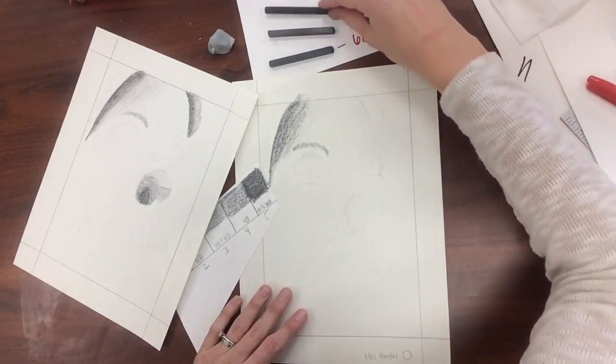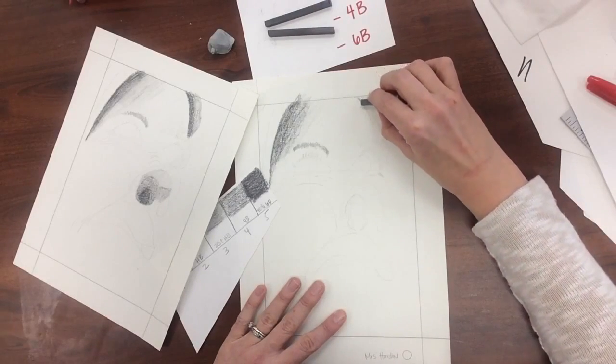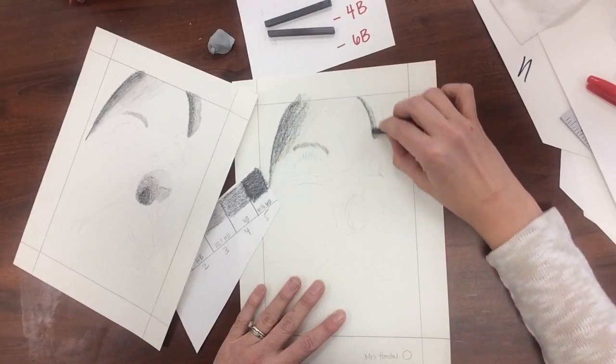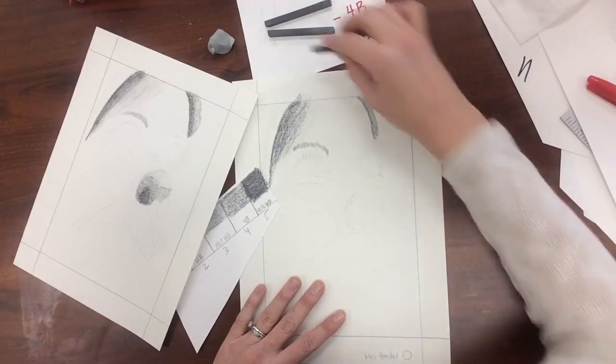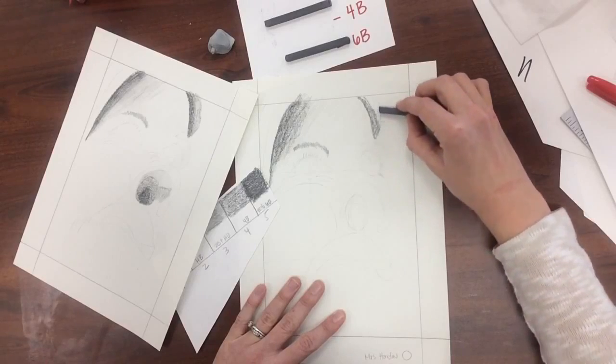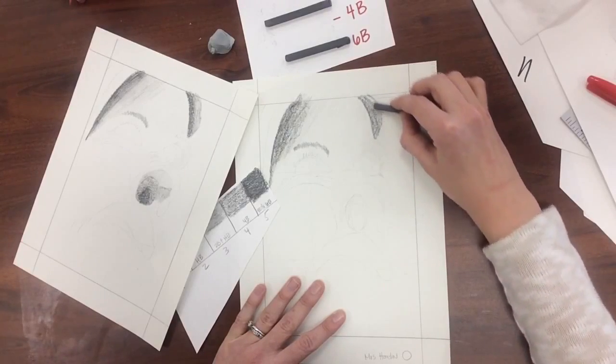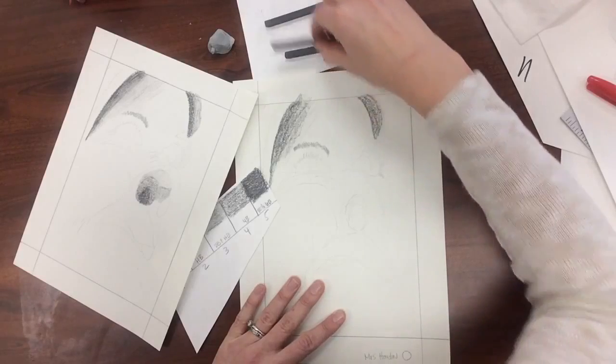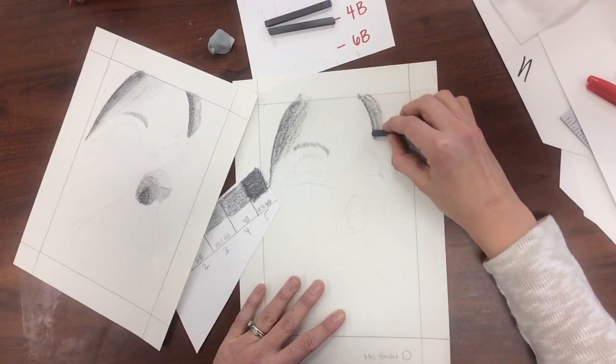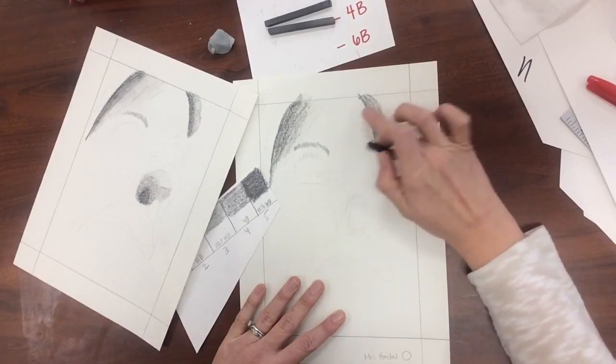So now I'm going back to my hair over here again where it gets really dark in my hairline. And it blends out to a lighter color, lighter value, excuse me, there's no color, just value. That's 4B, 6B is really dark. Again, I'm blending with my graphite stick, not my finger.